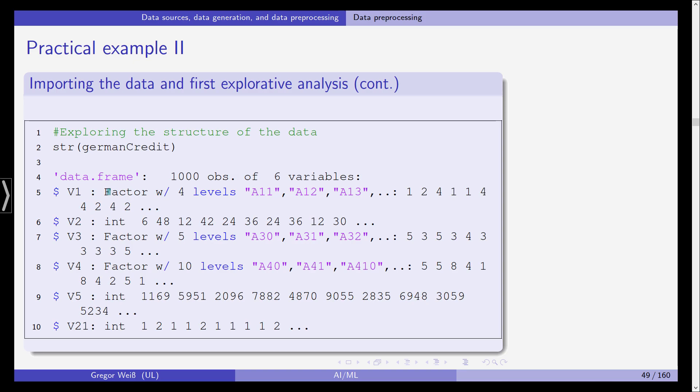To explore the structure of the data, we are using the command str for structure in R. If we enter str for German credit, we'll see that this is a data frame with 1000 observations and six variables. The six variables have names given by V1, V2, V3, V4, V5, and V21. The first one is a factor variable with four levels: A11, A12, A13, and A14.